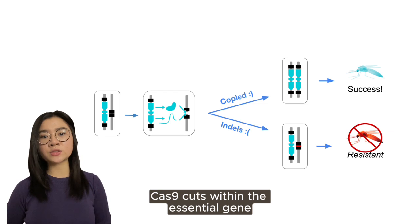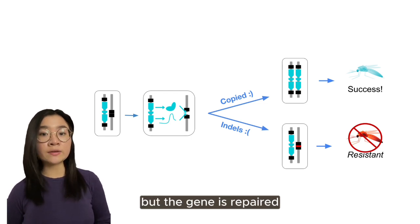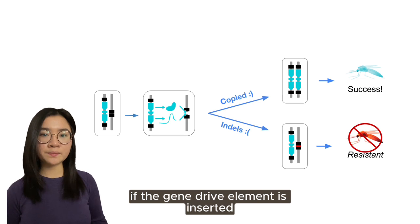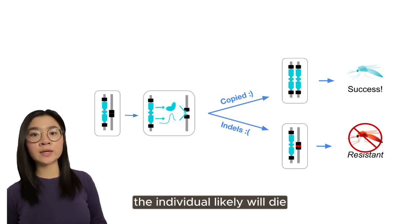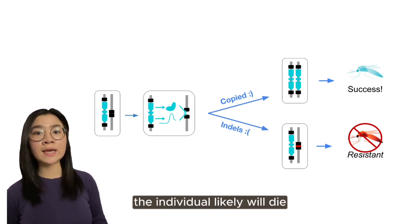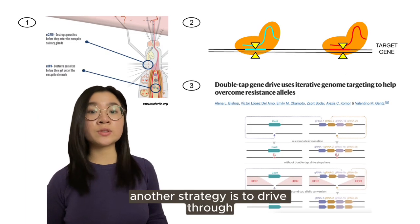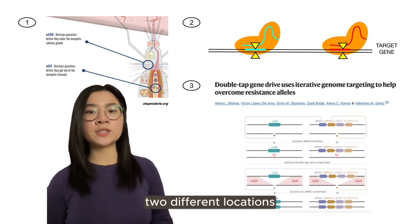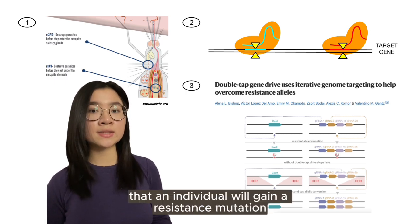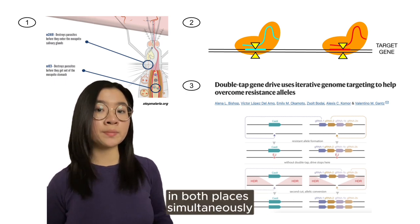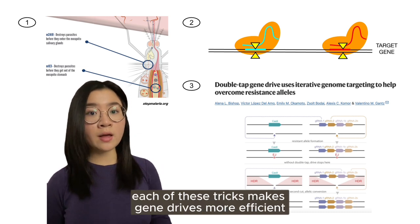Cas9 cuts within the essential gene, disrupting its function, but the gene is repaired if the gene drive element is inserted. If the cut is resolved in some other way, the individual likely will die and can't pass on the mutated sequence. Another strategy is to drive through two different locations in the genome — it's much less likely that an individual will gain a resistant mutation in both places simultaneously. Each of these tricks make gene drives more efficient.